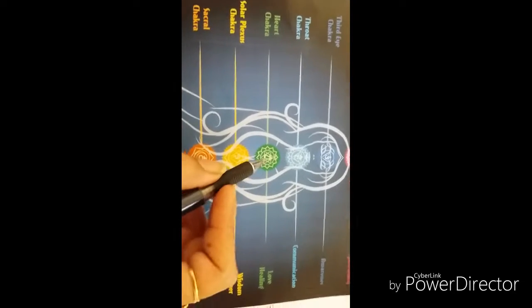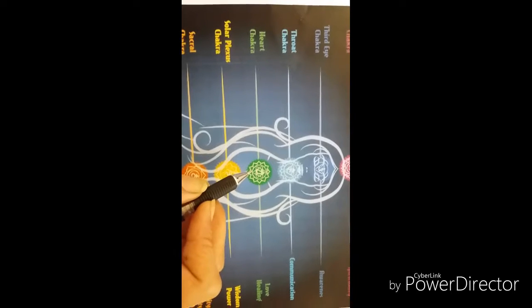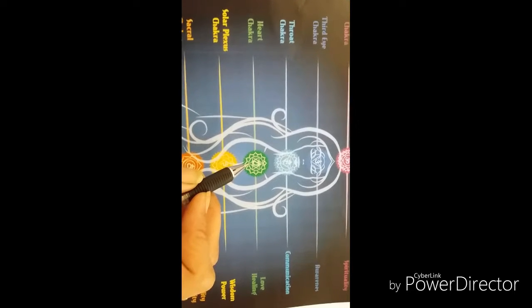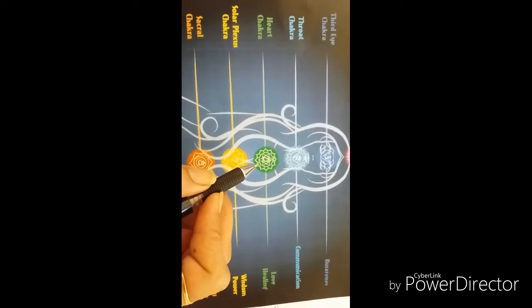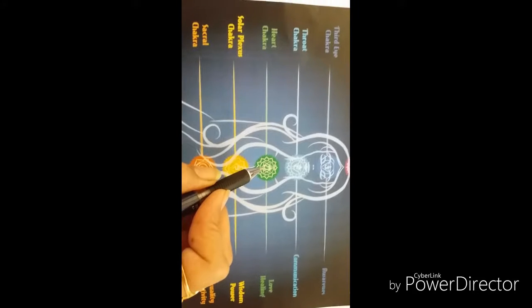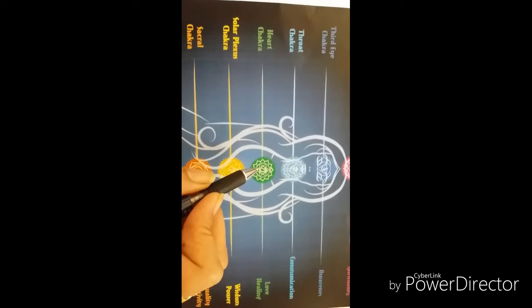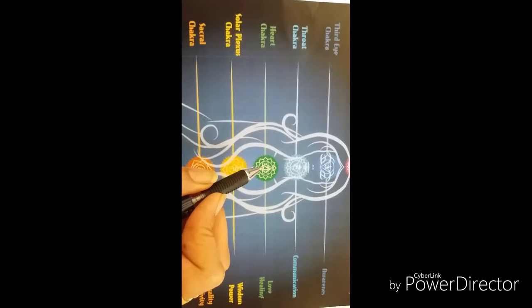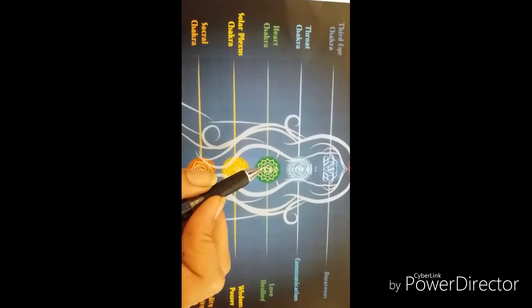It's also known as Anahata chakra. It's related to love, relationships, self-acceptance, and gratitude. Emotions are also generated by this chakra. It's our ability to love. The location is the center of the chest, just above the heart. Emotional issues related to it are love, joy, inner peace, etc.